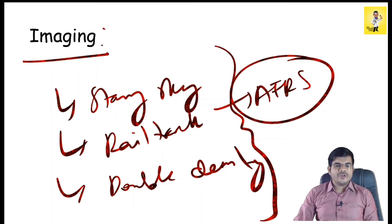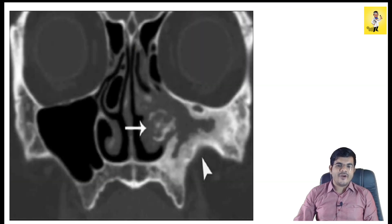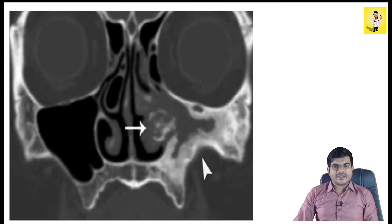How will you diagnose AFRS? There is a defined criteria: first, there must be Type 1 hypersensitivity; on examination there will be nasal polyposis and eosinophilic mucin; the characteristic CT finding of the double density sign should be present; and fungal stain should be positive. These are the major criteria for AFRS diagnosis.